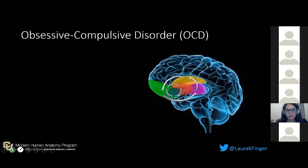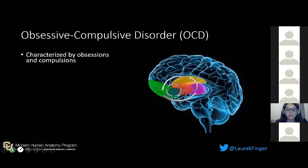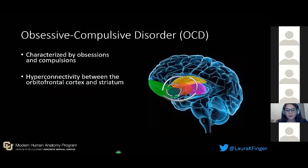Just to provide some background and rationale to my project, Obsessive-Compulsive Disorder, or OCD, is characterized by obsessions and compulsions. Obsessions are recurrent and persistent thoughts or urges, and those are followed by compulsions, which are repetitive behaviors or mental rituals. Neuroimaging studies have shown that patients with OCD have a hyperconnectivity between the orbitofrontal cortex, which is an area in the prefrontal cortex, and the striatum.